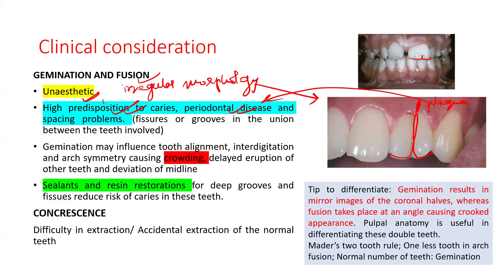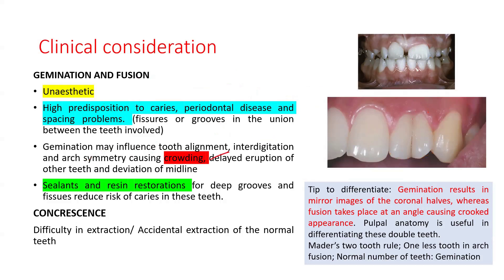With gemination, since one tooth germ is giving rise to two teeth, you need space for two teeth instead of one — this leads to problems in alignment, interdigitation, and arch symmetry, and may also lead to delayed eruption of adjacent teeth. For treatment, deep fissures and grooves can be managed by applying resin sealants to prevent caries.